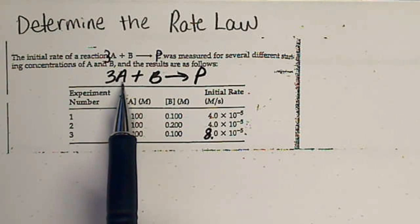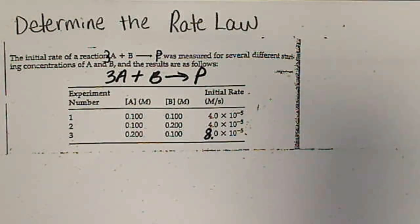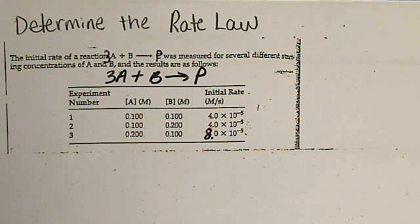For example, 3 moles of A plus 1 mole of B combine to make products, and we want to determine the rate law. Remember, the rate law cannot be determined from the balanced equation.